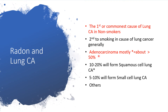When radon causes lung cancer, it will mostly cause adenocarcinoma in about 50 to 60 percent of affected individuals. The adenocarcinoma begins inside the cells lining the alveoli and produces mucus. In about 10 to 20 percent of cases it will form squamous cell lung cancer, beginning in flat cells lining the inside of the lungs. In about 5 to 10 percent of cases it will form small cell lung cancer, and other lung cancers are not ruled out.